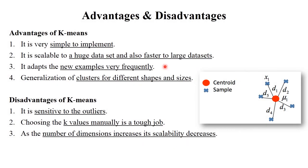The advantages of K-means clustering algorithm are: it is very simple to implement, it is scalable and works fast on large datasets, it adapts to new data or new features of data frequently, and it generalizes clusters for different shapes and sizes as per the size of the data. The disadvantages are: it is sensitive to outliers; choosing the K value manually is a very tough job; and as the number of dimensions increases, scalability decreases — it completely depends on the features and size of the dataset.